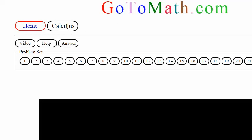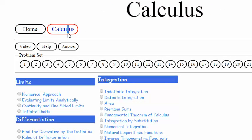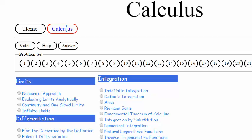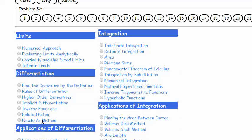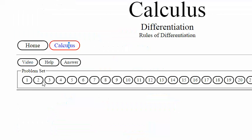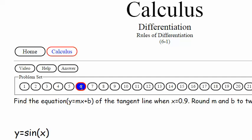We are at GoToMath.com working some calculus. It looks like Calculus 1 there. Let's go down to Rules of Differentiation and we're looking at 6.1.